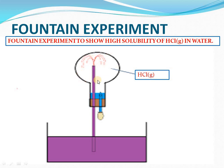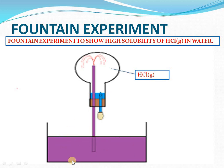Once the HCl gas is absorbed, a vacuum is created due to the low pressure. As a result, the blue litmus solution moves up into the flask. When the blue litmus solution comes in contact with the hydrogen chloride gas, it turns red. This experiment demonstrates the high solubility of HCl gas in water. The same experiment is used for ammonia, but with red litmus solution — and the color change would be red to blue.